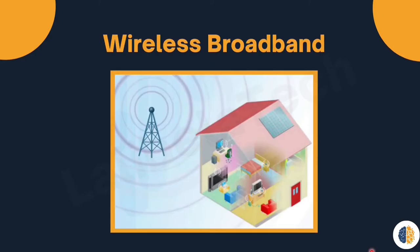In the next slide we will discuss wireless broadband. Another wireless solution for the home and small business is wireless broadband. The wireless broadband service uses the same cellular technology as a smartphone. An antenna is installed outside the house, providing either wireless or wired connectivity for devices in the home. In many areas where cable and digital subscriber lines are not available, wireless may be used to connect to the internet.